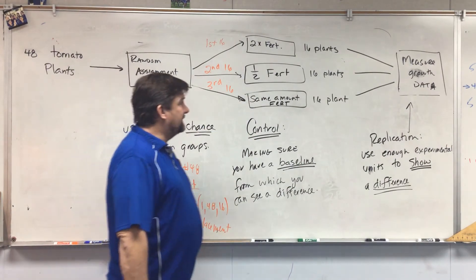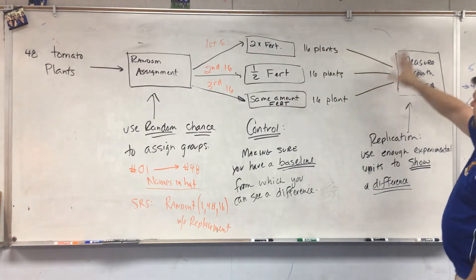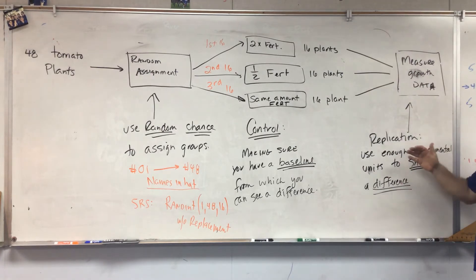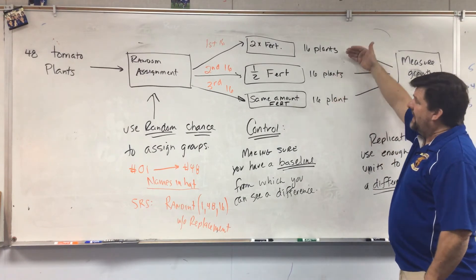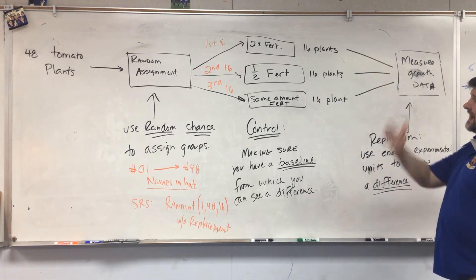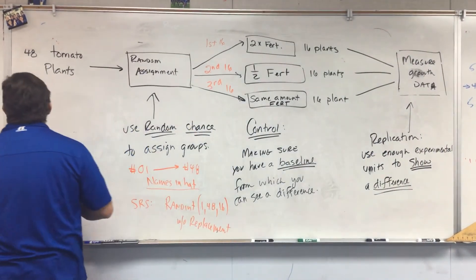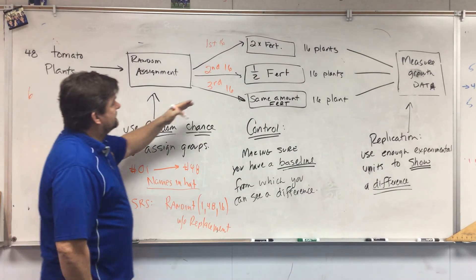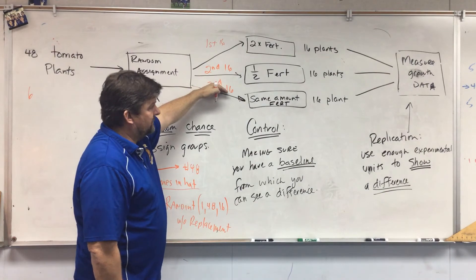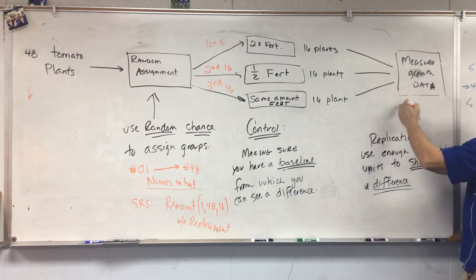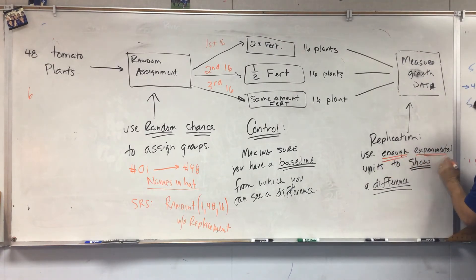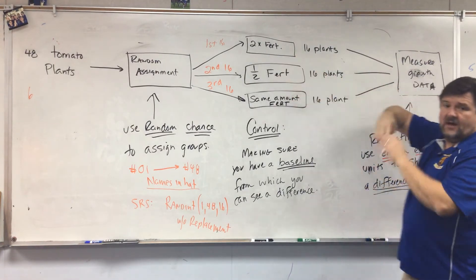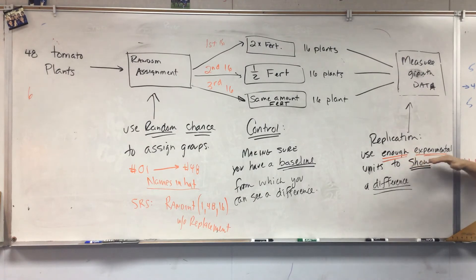After growing the plants we measure growth by group. Replication means using enough experimental units to show a difference. With 16 plants per group, we can find an accurate average and compare all three levels. But if we only had 6 plants total — two per group — and one got a disease, you'd only have one plant left in that group. You have to make sure you have enough experimental units to show a difference.